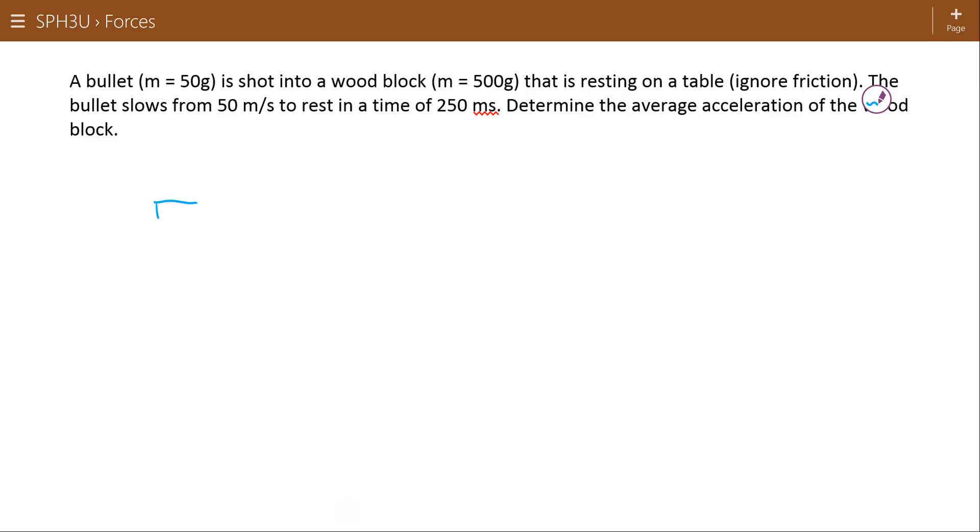So we have a bullet and a wood block. And the bullet is zooming along at 50 meters per second. Not all that fast actually for a bullet. And it's going to wedge itself in here and when it does it's going to slow to rest. And that is going to take a time of 250 milliseconds or 0.25 seconds. So what we want to know is the acceleration of the wood.